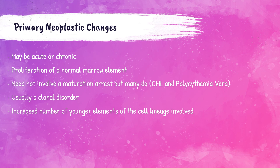Hematopoietic neoplasms are unregulated, uncontrollably growing blood cells. Neoplasm changes may either be acute or chronic. Acute neoplasms generally develop suddenly and need prompt treatment. Those that are chronic develop more slowly and may need management over a many-year period. This is a proliferation of a normal marrow element, usually a clonal disorder, meaning there is one or multiple cell lines of normal elements — for example, a massive proliferation of monocytes.